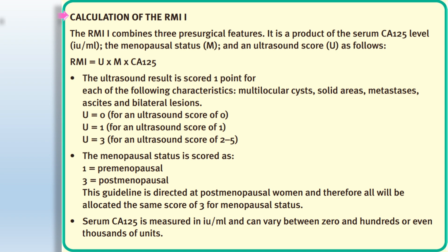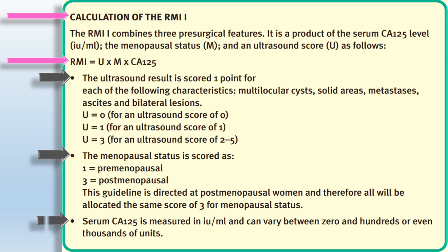How to calculate RMI 1? RMI 1 combines three pre-surgical features: serum CA-125 levels (in international units per ml), menopausal status, and ultrasound score. The formula is: RMI = U × M × CA-125. The ultrasound score awards one point each for multilocular cysts, solid areas, metastasis, ascites, and bilateral lesions. U = 0 for ultrasound score of 0; U = 1 for score of 1; U = 3 for score of 2–5. Menopausal status: 1 = premenopausal, 3 = postmenopausal. Since this guideline is directed at postmenopausal women, all are allocated a menopausal score of 3. CA-125 is measured in international units per ml and can vary from zero to hundreds or thousands of units.